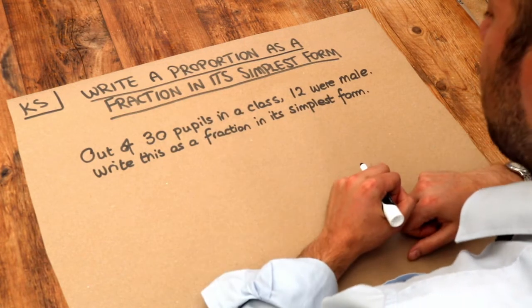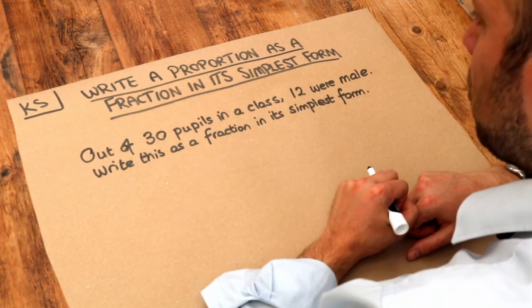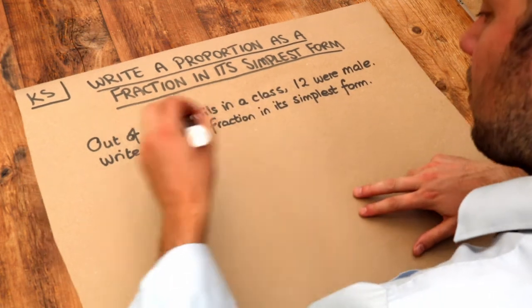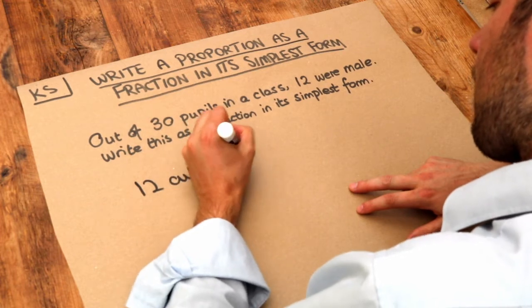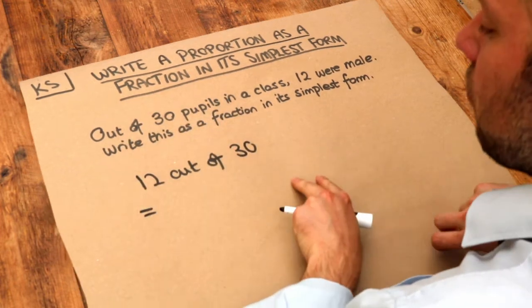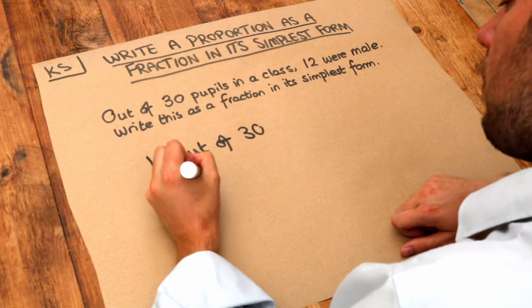Now often we like to write proportions as fractions, so if we were to write 12 out of 30, then as a fraction we could write that as 12 over 30.